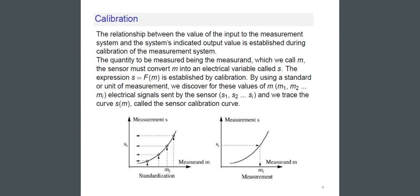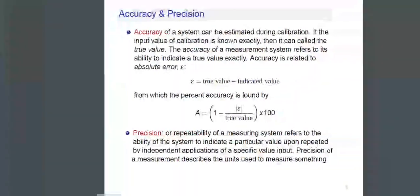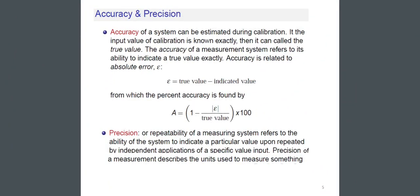Now talk about the next term: Accuracy and Precision. Accuracy: The accuracy of a system can be estimated during calibration. If the input value of calibration is known exactly, then it can be called the true value.